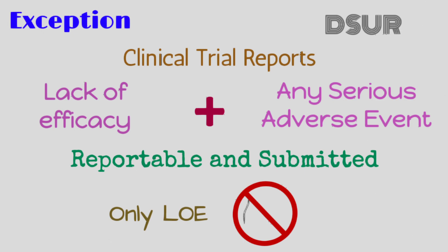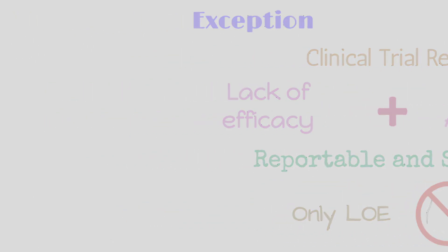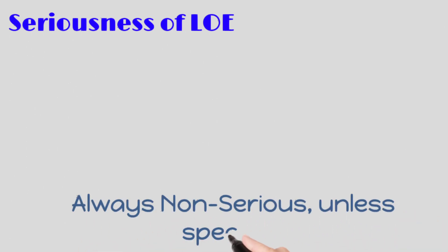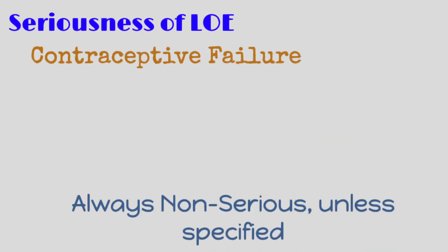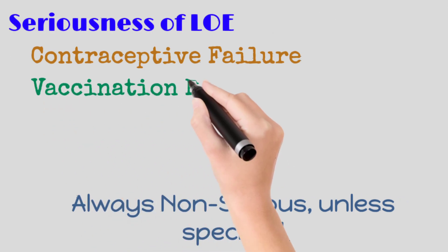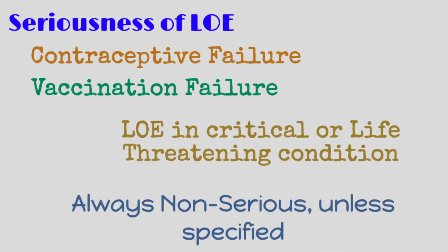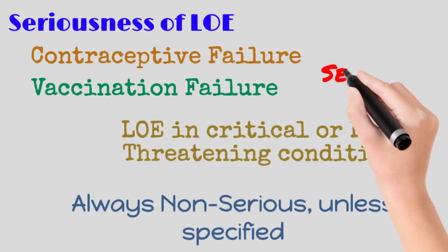Now let's discuss how to determine the seriousness of lack of efficacy cases. The first criteria is that a report of lack of efficacy is always non-serious unless clearly specified by the reporter as serious. Other scenarios include: all reports of contraceptive failure, reports of vaccination failure, and lack of efficacy of any drug in a critical or life-threatening condition — all such reports should be considered as serious.